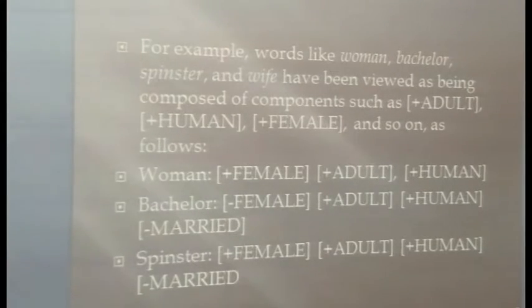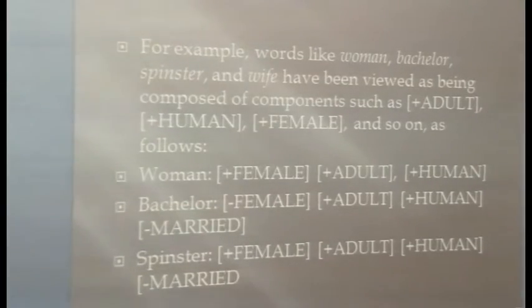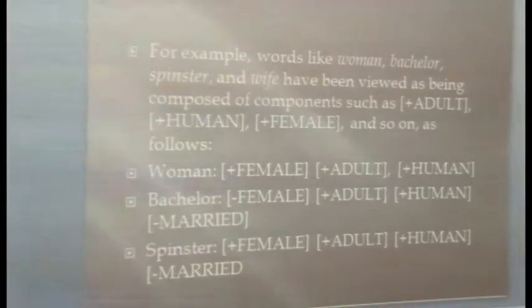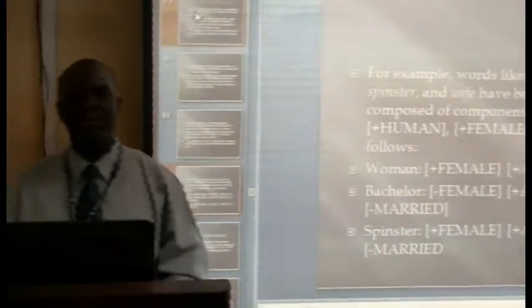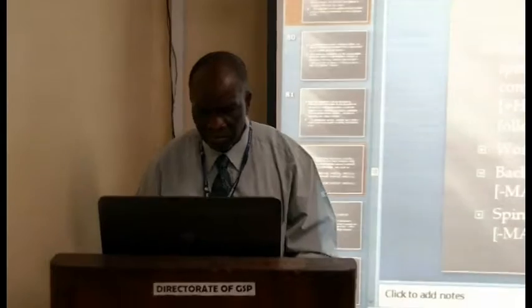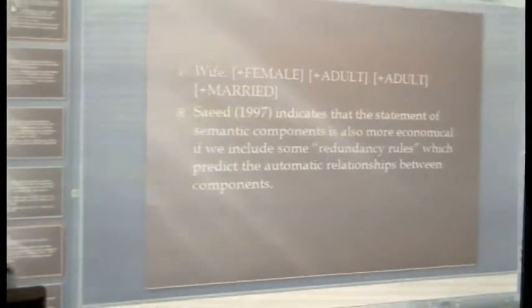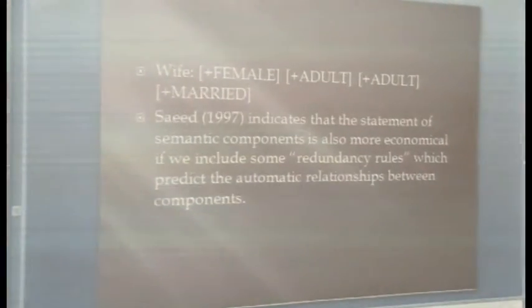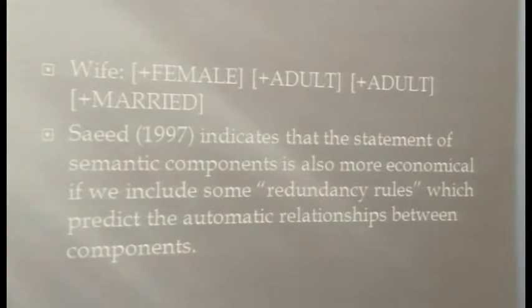What about the opposite of bachelor, which is spinster? We can reduce the meaning of spinster to just four components: plus female, plus adult, plus human, and minus married. It has been pointed out that the statement of semantic components is more economical if we include some redundancy rules.